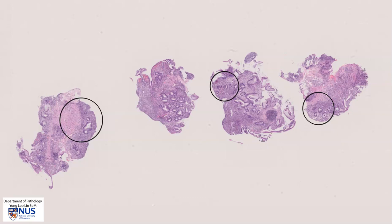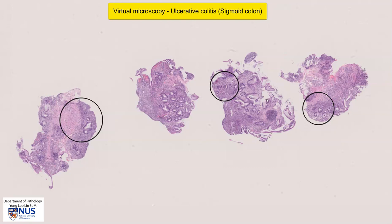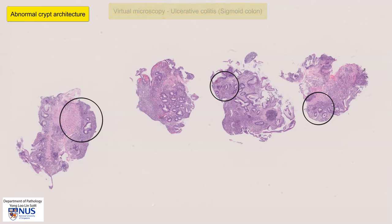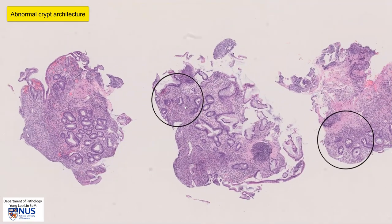This is a virtual microscopy slide of a biopsy of the sigmoid colon from a case of ulcerative colitis. First of all, let's have a look at the crypt architecture on low magnification. We can see here in this piece that there is quite a bit of distortion and disruption of the normal crypt architecture.